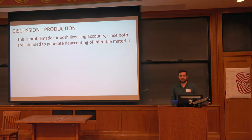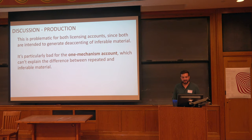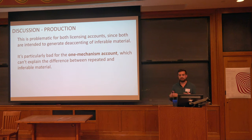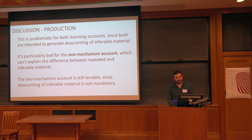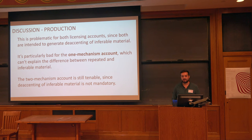This is potentially problematic for both theoretical licensing accounts, insofar as they're both designed to account for a phenomenon we couldn't reproduce. But it's particularly bad for the one-mechanism account because there's no room in that account for inferable and repeated material to get different scores — they have an identical grammar, so it's not clear why they would pattern differently. Technically, the two-mechanism account is still tenable because it doesn't predict that de-accenting of inferable material is mandatory in production. So we decided to move on to perception.